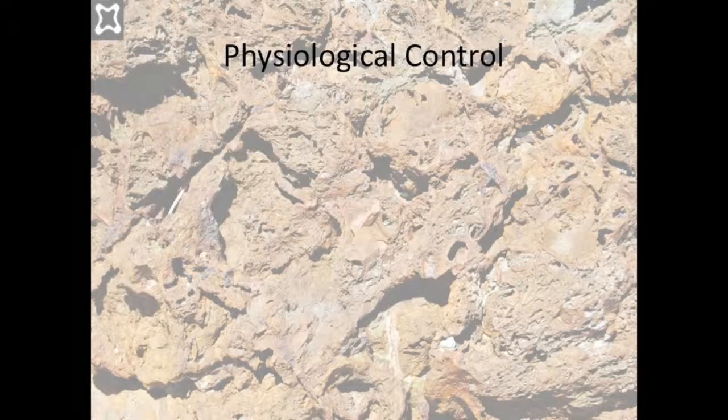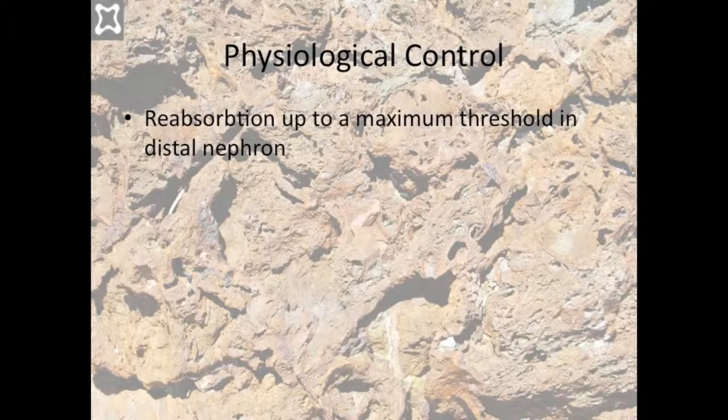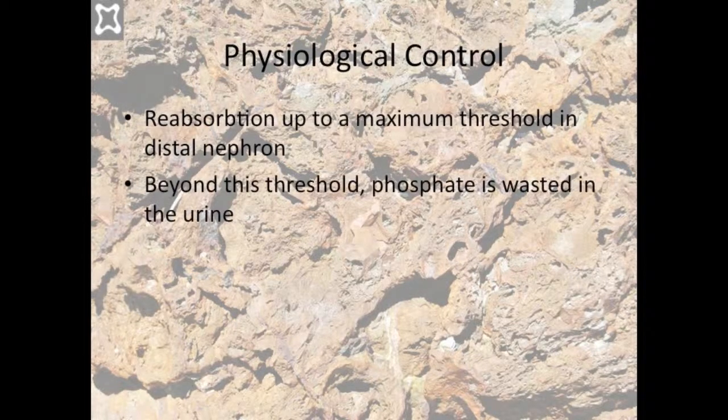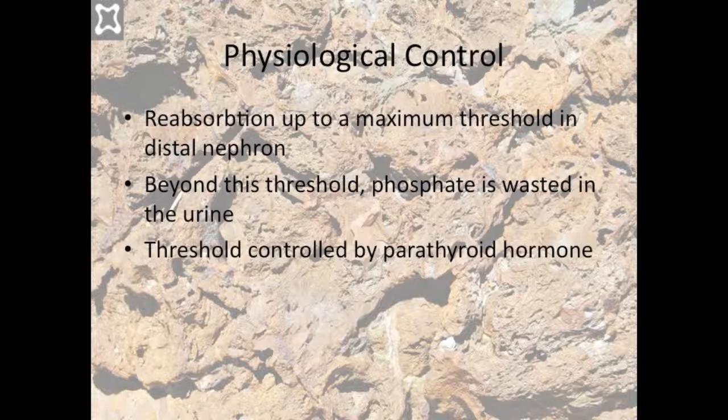Control of phosphate excretion largely occurs at the distal nephron. It is reabsorbed up to the maximum rate, after which phosphate is wasted in the urine. This maximum is directly reduced by the action of parathyroid hormone, which enhances urinary phosphate loss.